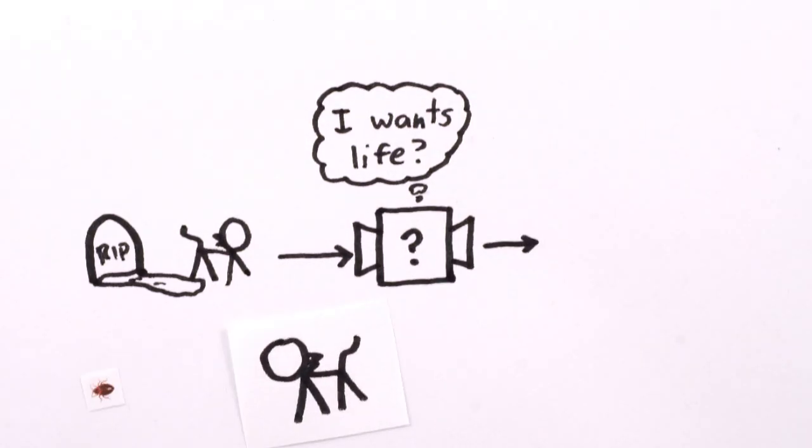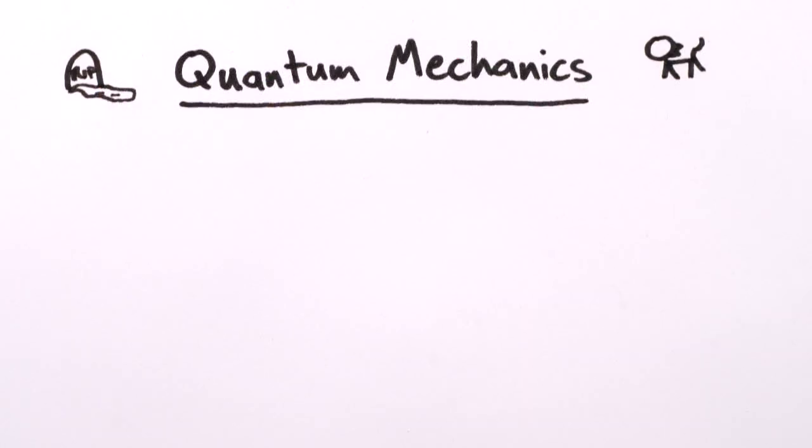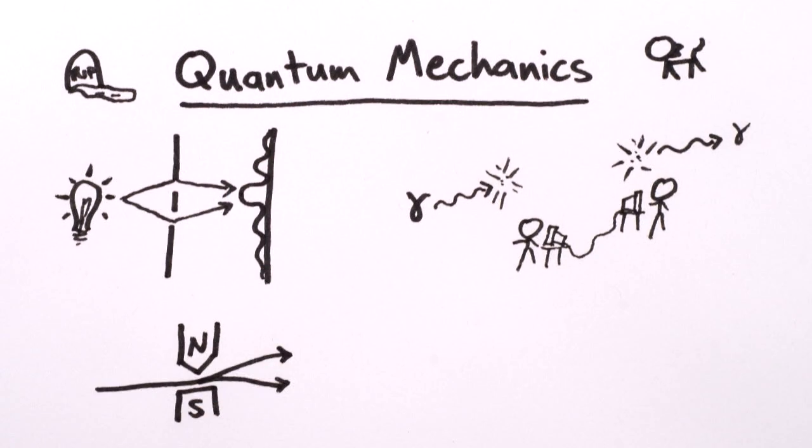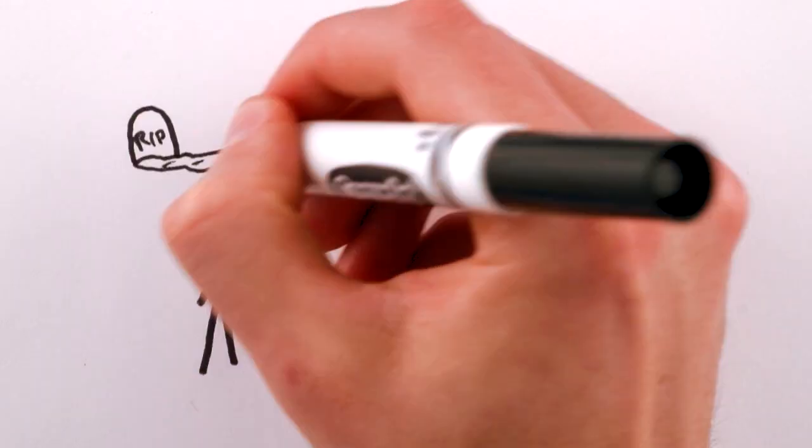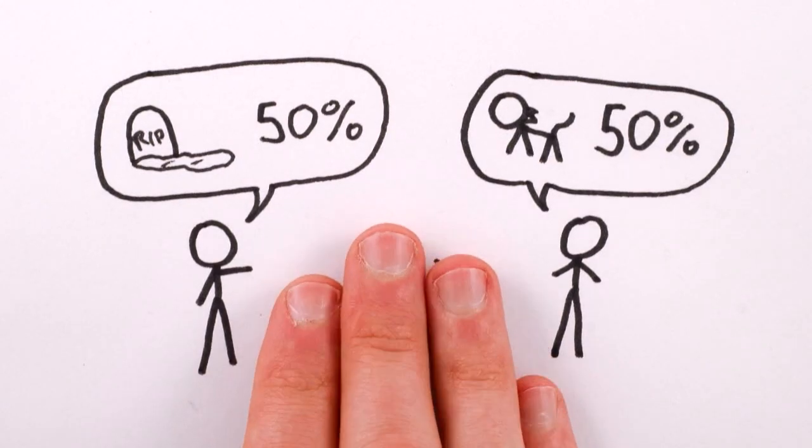This isn't just a problem with cats, either. It plagues every single quantum mechanics experiment, famous or otherwise, from the double-slit experiment and quantum teleportation, to the Stern-Gerlach experiment and tests of the Bell inequalities. In every case, we can predict how likely it is for a particle to be in one state or another, but have no clue how it actually ends up that way.